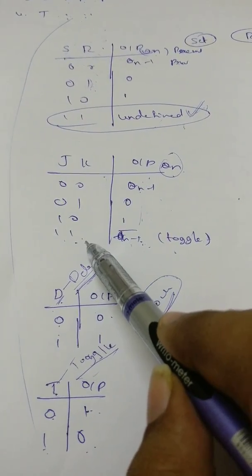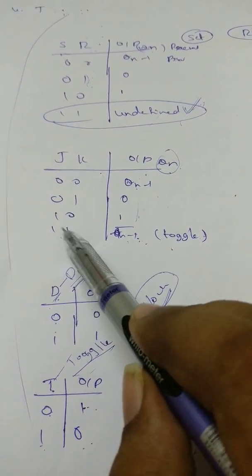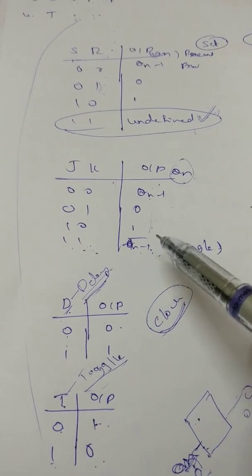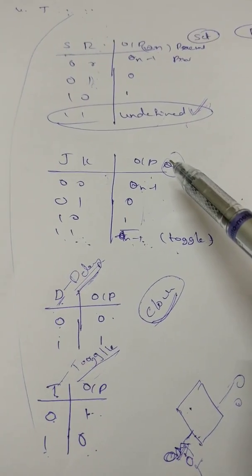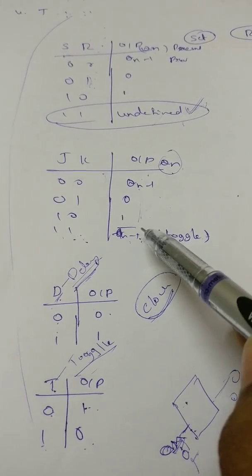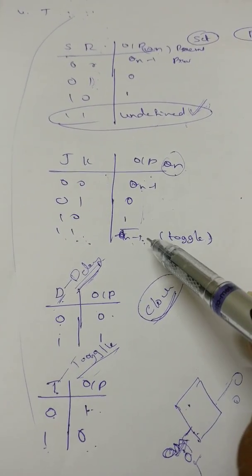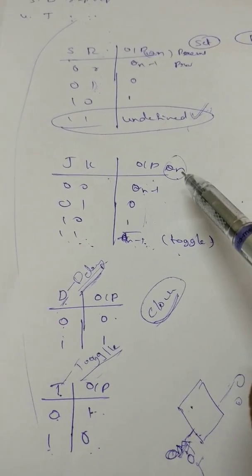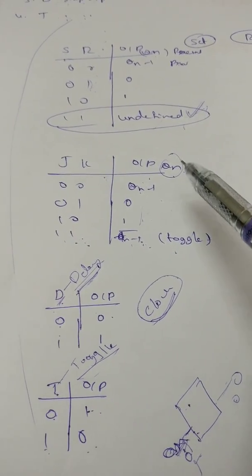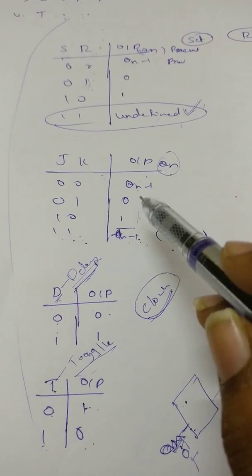And fourth case is designed as: if both are 1, the output will toggle to the previous state. Means Qn equals Qn minus 1 bar. If previous state is 0, present is 1. If previous state is 1, present is 0. By this way, you can remember SR and JK flip-flop easily.